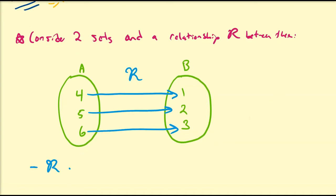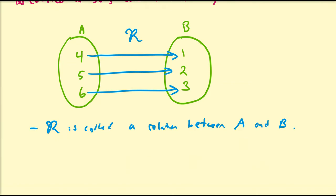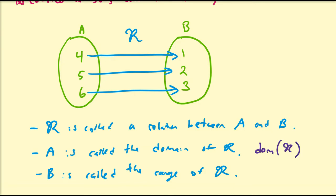So what we call R is called a relation between A and B. A couple things of terminology: A is called the domain of R, and B is called the range of R. Sometimes people will abbreviate these as dom(R) for domain of R, and ran(R) which is the range of R.